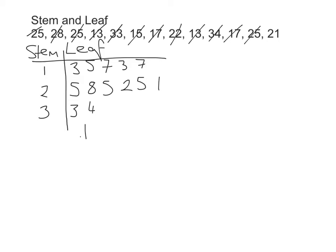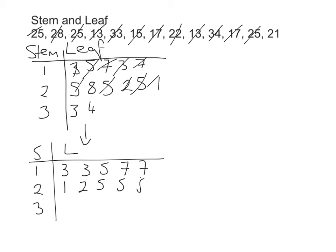So now I'm going to go and actually put that into an ordered stem and leaf diagram. I would highly recommend doing it this way to make sure you don't leave any out. So I'm just going to look at my first row now and put them in order. So that's going to be three, three, five, seven, and seven. My next row is going to be one, two, five, five, five, and the number eight. And my final one is going to be three and four.